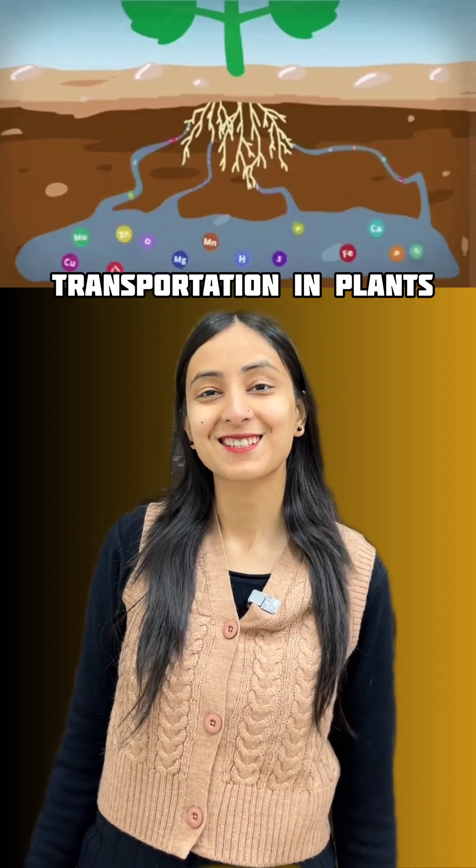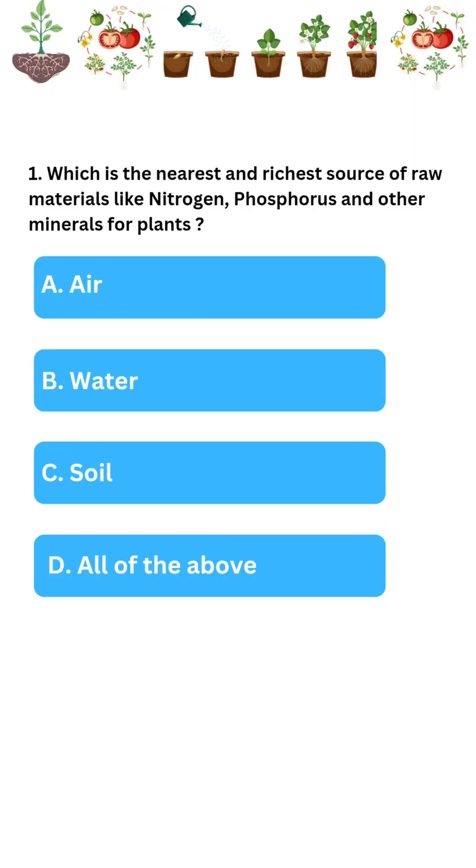How much do you know about transportation in plants? Let's find out. Which is the nearest and richest source of raw materials like nitrogen, phosphorus, and other minerals for plants? Soil is the correct answer.